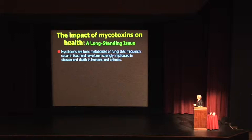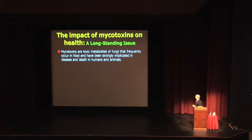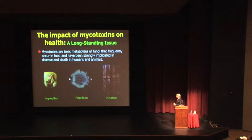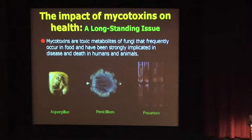These compounds called mycotoxins have a major impact. They're secondary metabolites of fungi that can occur on the food you eat and also in animal feed. They've been strongly implicated in disease and death, not only in animals but also in humans. You've probably seen some of these molds — this is an Aspergillus mold grown on thermal corn, very common, and it produces some really bad toxins.